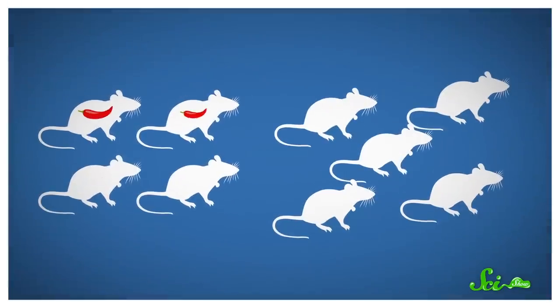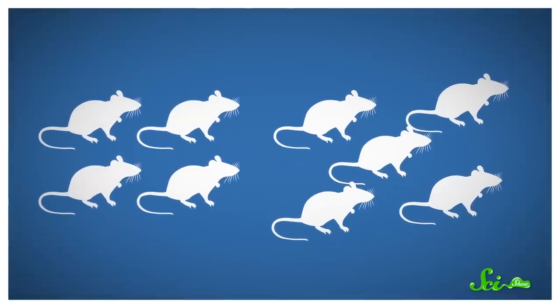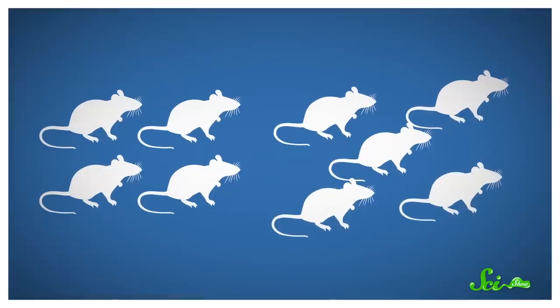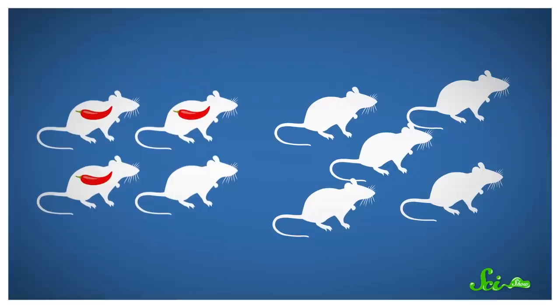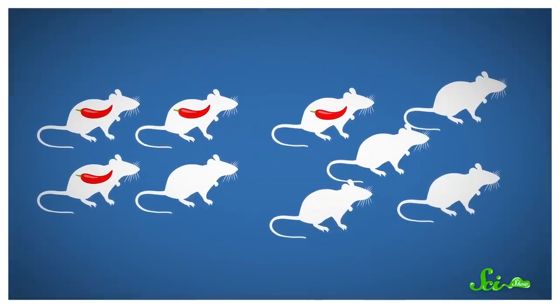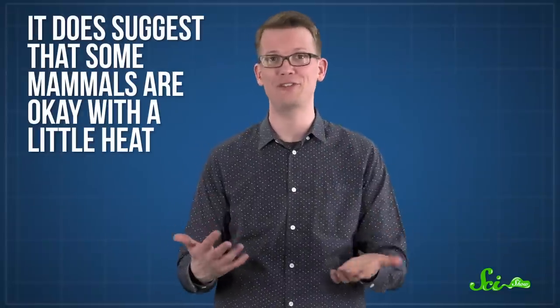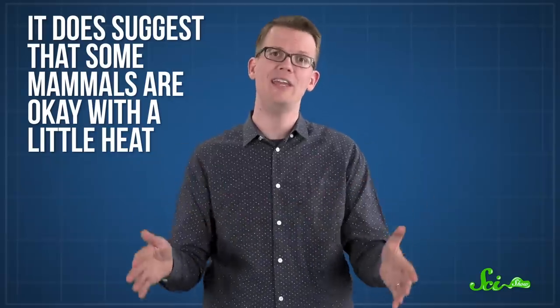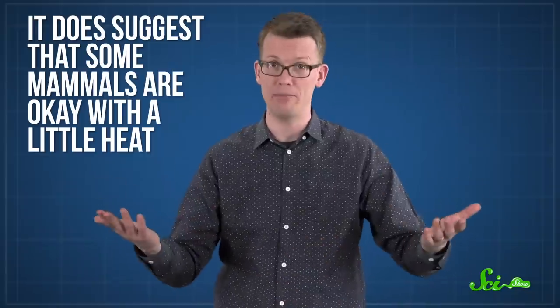In a study published in 1990, researchers had four rats eat spicy food for two weeks, while five other rats didn't. Afterwards, when given the choice to return to a non-spiced diet, three of the four rats in the first group stuck to the spiced meals. And one of the five that didn't have the spicy stuff went over to the spicy stuff. That's a small study, and it's nearly 30 years old. But it does suggest that some mammals are okay with a little heat, and maybe would even learn to eat spicy peppers if surrounded by them.